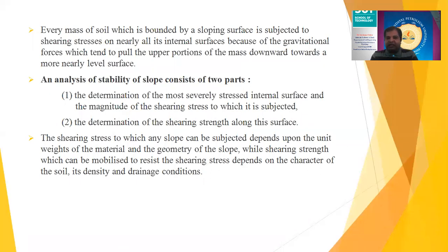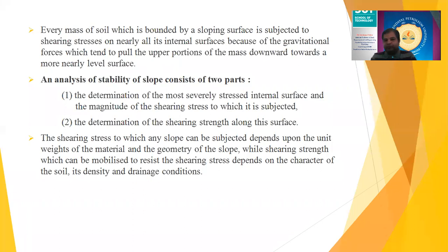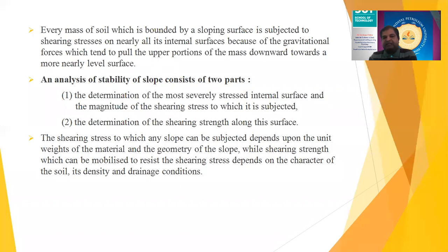Every mass of soil bounded by a sloping surface is subjected to shearing stress on nearly all internal surfaces, because gravitational forces tend to pull the upper portion of the mass downward toward a more level surface. The stability analysis of a slope has two main parts: first, determination of the most severely stressed internal surface and the magnitude of the shearing stress; second, determination of the shearing strength along that surface.